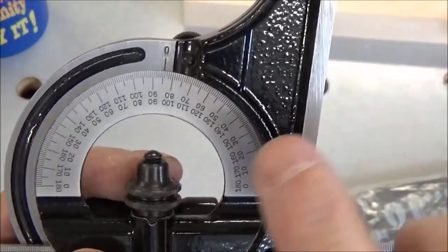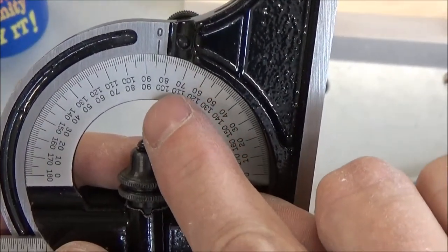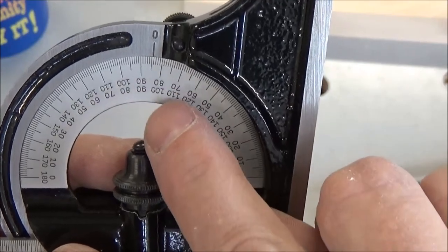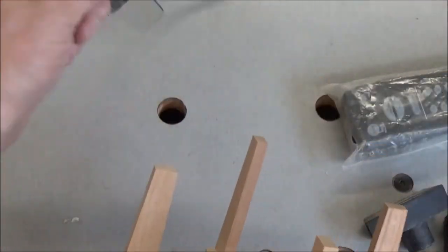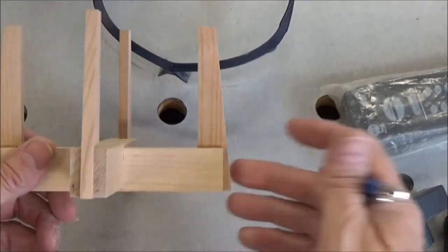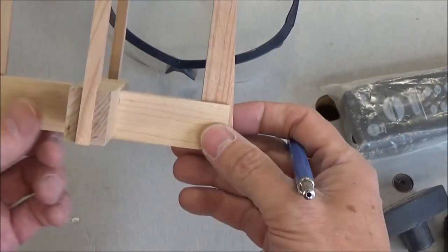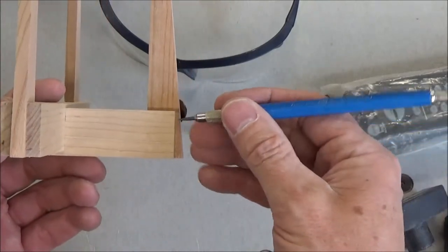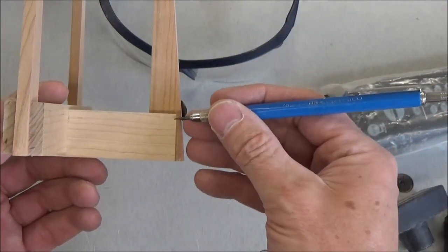So after taking off my safety glasses and putting my reading glasses on, I can see that gauge read just about 6 degrees. So that's what I've set my miter gauge for.